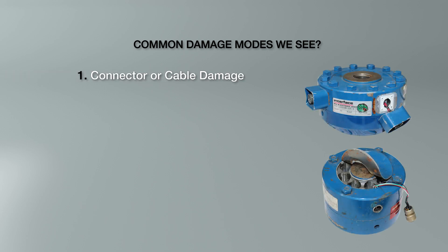Some of the common damage modes we see: number one, connector or cable damage. This happens pretty frequently, and we recommend a calibration because it can impact the resistance of the bridge. Number two, zero shift — we see this a lot as well. This is a very common symptom of an overload. There can be other things that cause a zero shift, but that is very common. We can re-zero a load cell within reason, but past a certain point we can't repair it.